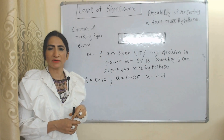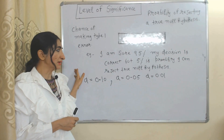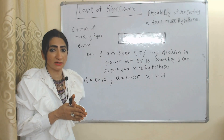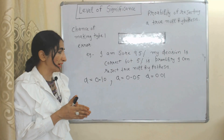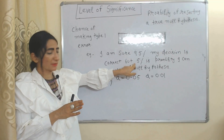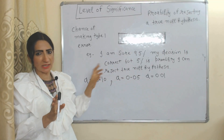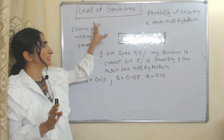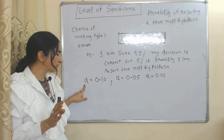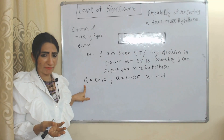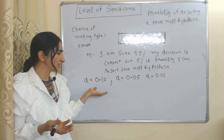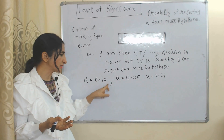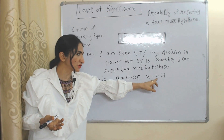For example, I am 95% sure my decision is correct, but there is a 5% probability I can reject a true null hypothesis. This 5% will be called the level of significance. Level of significance is represented by alpha (α), and normally we have these values of alpha: 0.10, 0.05, or 0.01.